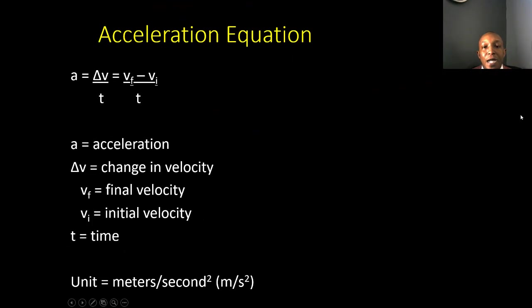Here's our acceleration equation. A, or acceleration, equals the change of velocity — which is our final velocity minus our initial velocity — over time. A equals acceleration, the triangle V stands for change in velocity, VF is final velocity, VI is initial velocity, and T stands for time. The unit for acceleration is meters per second squared.